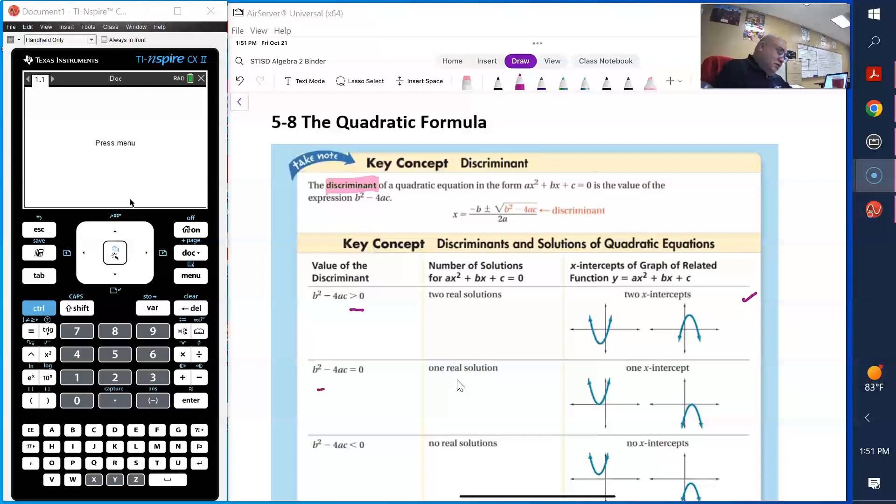When the discriminant is equal to 0, exactly 0, there's only one answer, there's only one solution, or it intersects the x-axis once.